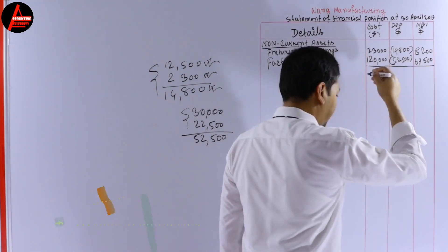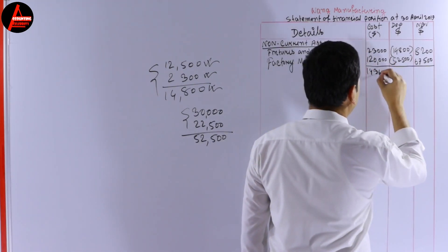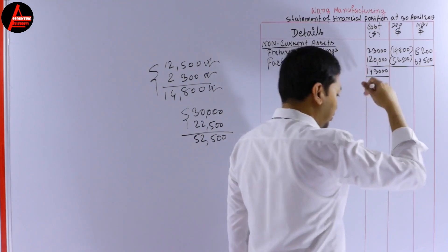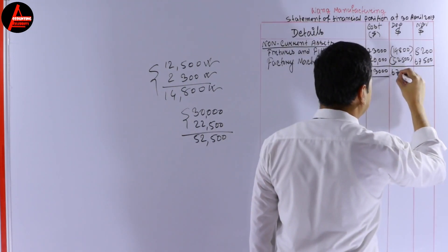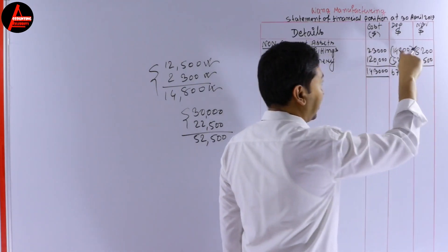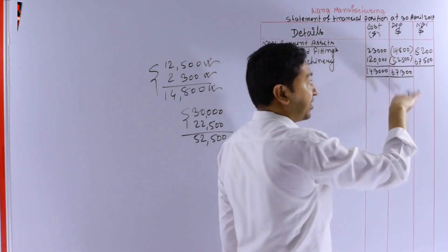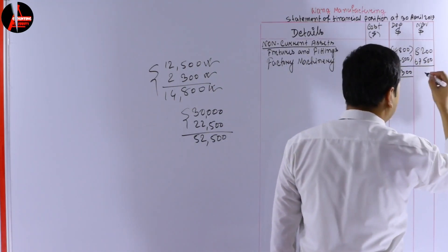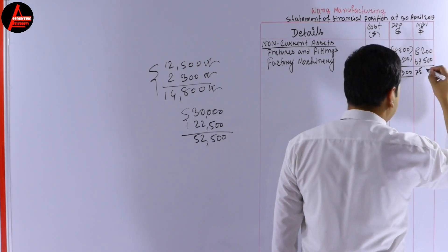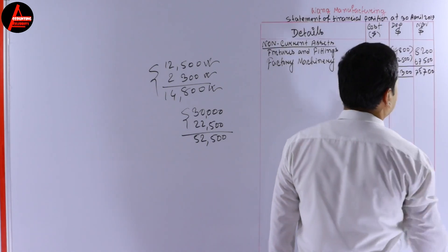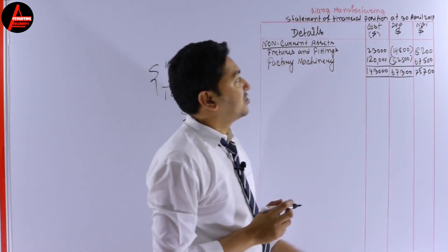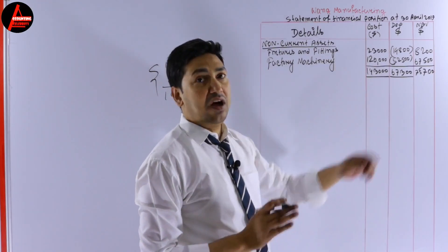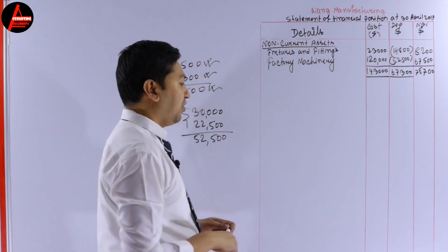Adding the cost column gives $143,000. This is the closing line for the cost column. Adding the two net book values — $8,200 and $67,500 — gives a total non-current assets net book value of $75,700. This value will be added with the other items below.